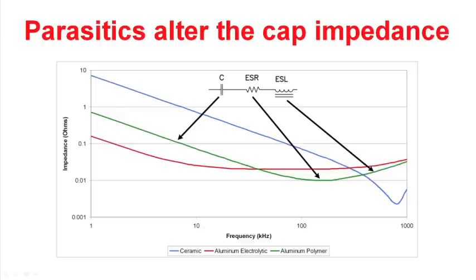On this chart, I've plotted the impedance of these capacitors over frequency. The blue line is the ceramic capacitor. The red line is the aluminum electrolytic capacitor. And the green line is the aluminum polymer.